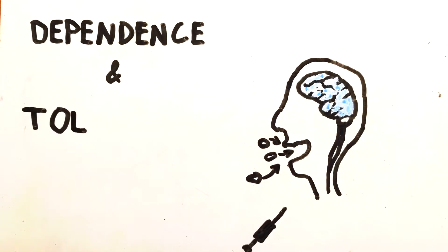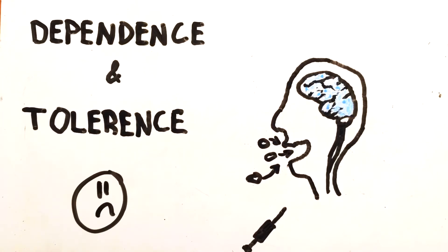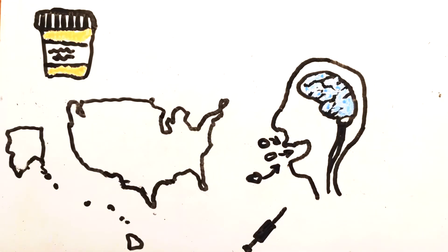Eventually the body becomes dependent on and tolerant of the drugs, leading the body to want more. Addictions often begin with prescription drugs and then go out of control. This has led to an opioid crisis.